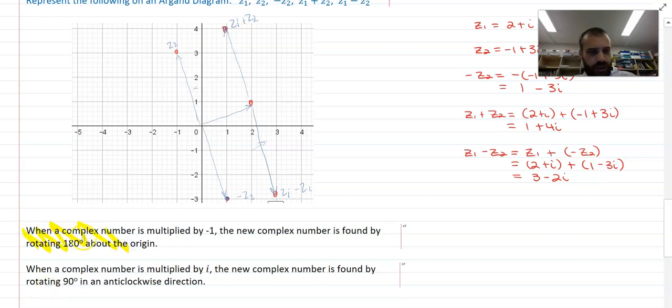When a complex number is multiplied by negative one, it spins around 180 degrees. And you can see we went from z2 to negative z2. It just spun around 180 degrees. So that one we know, and that one feels pretty good.